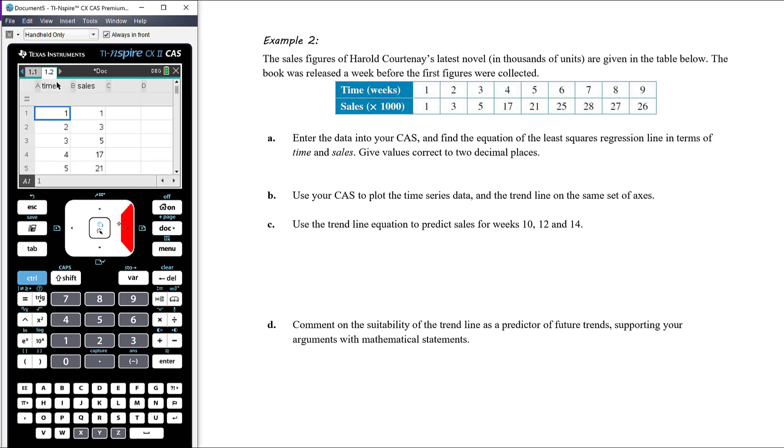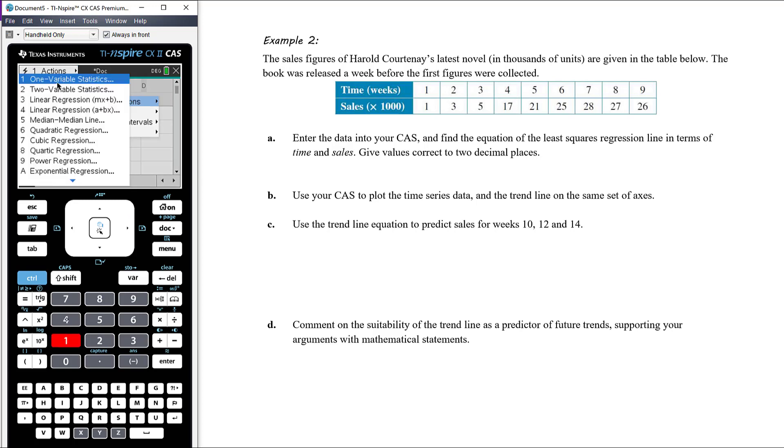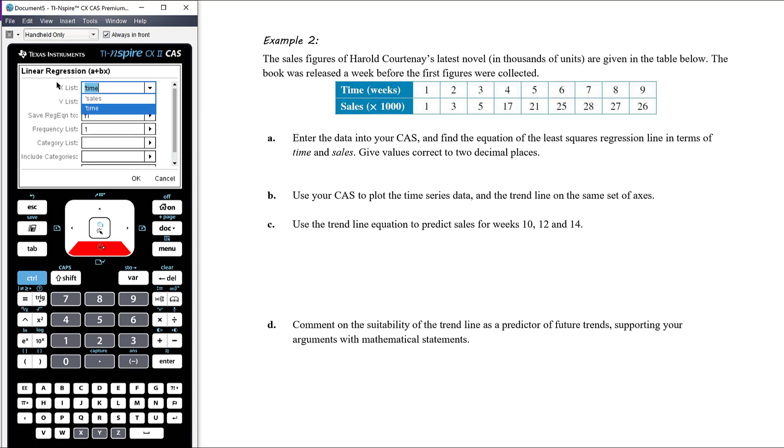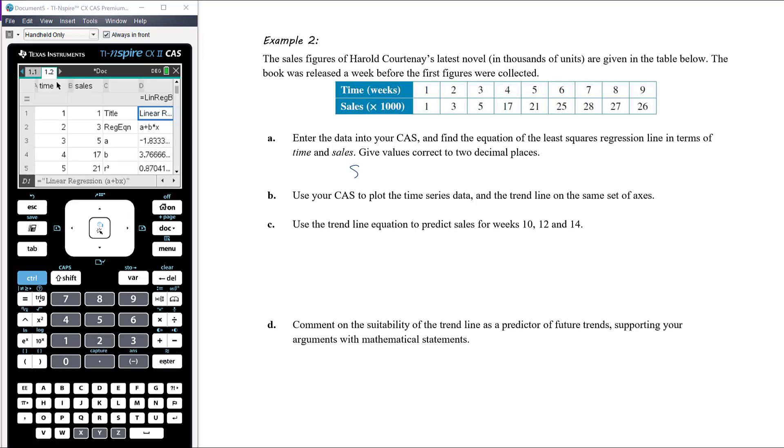Enter the data in your CAS. So I've done that over here. And find the least squares regression line in terms of time and sales. So we could do that here in our data and statistics, sorry, our spreadsheets page while we're here. Menu 4-1-4. My X list is time, which is weeks in this case, and my Y list is sales. So there's my equation. So the sales times 1,000 are equal to A, which is negative 1.88, sorry, negative 1.83, two decimal places, plus 3.77 times the time in weeks, so the weeks, I'll call that. So it's times the week number. Or weeks, whichever. You could say time, brackets, weeks as well.